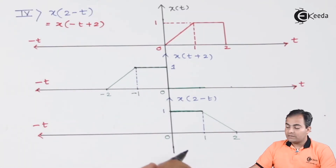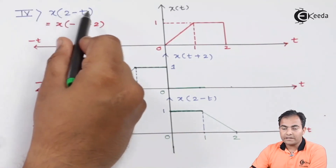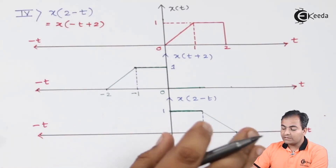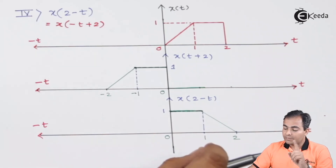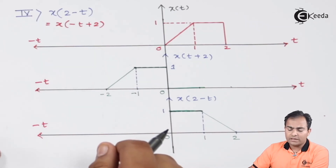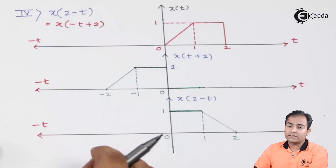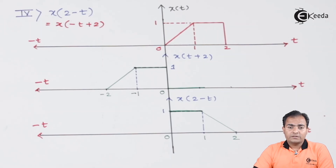This is how we draw the plot of x(2-t), which equals x(-t+2). Always keep in mind: some colleges ask you to keep the y-axis common — it is not necessary unless specifically stated. Thank you for watching this video.